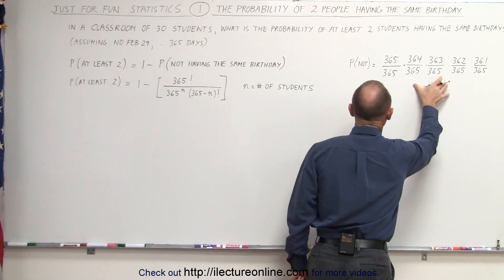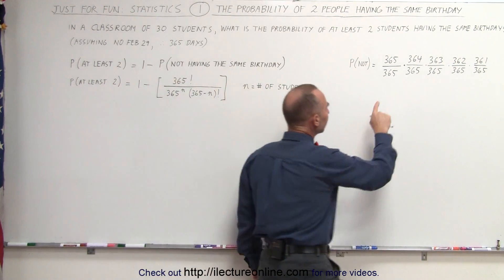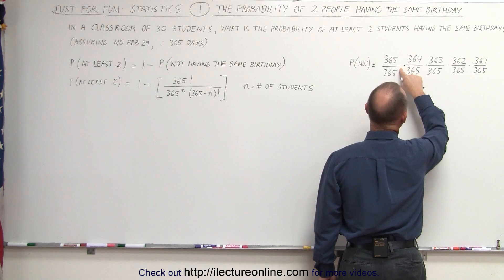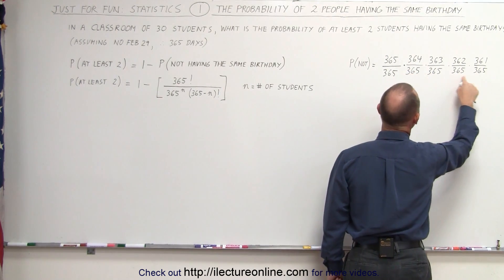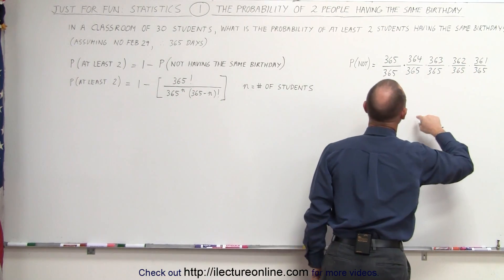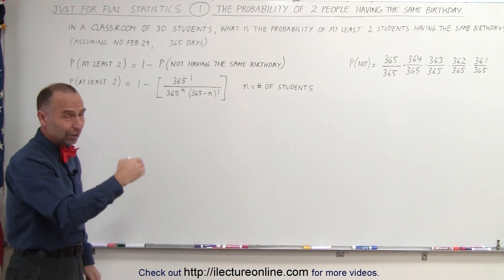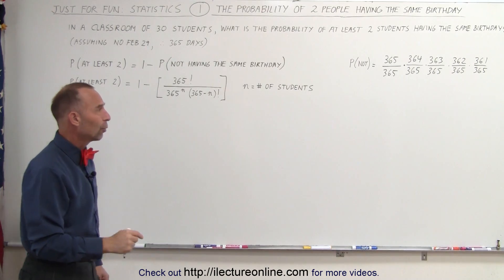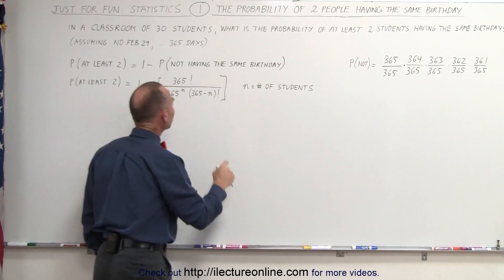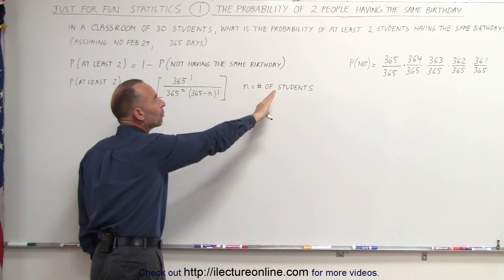Taking this pattern and reducing it to a mathematical equation gives us the formula. Notice that 365 raised to an exponent — equivalent to the number of students in the room — appears in the denominator. At the top, 365 factorial means 365 times 364 times 363 all the way down to 1, but it ends at however many students you have. You then divide by 365 minus n factorial to cancel out the remaining terms in the numerator.